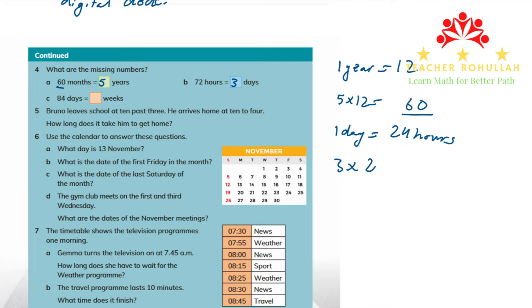We can verify this: three times 24 — three times four is 12, two times three is six, and six plus one (carried) is seven — giving us 72 hours.